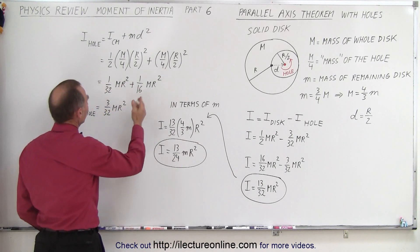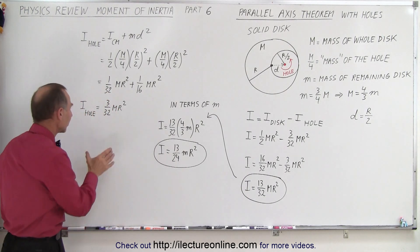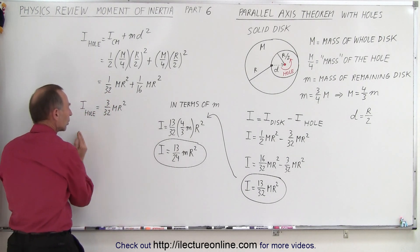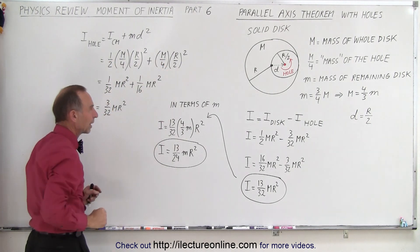When we simplify that we get 1/32 MR squared plus 1/16, which is 3/32 MR squared. So that is the moment of inertia of the hole that's being moved, and we use the parallel axis theorem to come up with that equation.